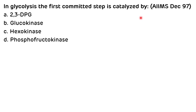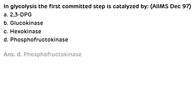Second question: 'In glycolysis, the first committed step is catalyzed by?' Options: A. 2,3-DPG. B. Glucokinase. C. Hexokinase. D. Phosphofructokinase. As we have already discussed, in glycolysis the first committed step or rate-limiting step is catalyzed by phosphofructokinase. The correct answer is D.